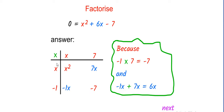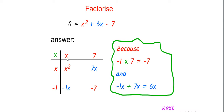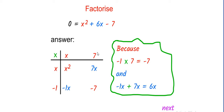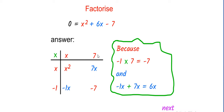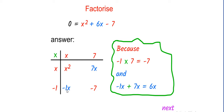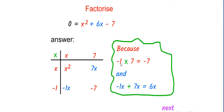The first step is to draw a box — a multiplication box. x squared is a product of x times x, and minus 7 is a product of 7 times minus 1. So x times 7 gives 7x, and x times minus 1 gives minus x, because minus 1 times 7 equals minus 7.